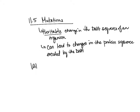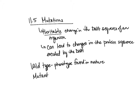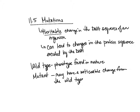The first term to be aware of is the wild type — the phenotype found in nature. This is what the DNA should look like, as it's found in the wild and hasn't been manipulated in the lab or otherwise. Then we have a mutant, which may have a noticeable change from the wild type. We'll talk about these noticeable changes and how we get these different types.